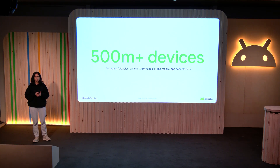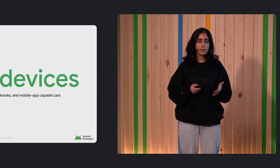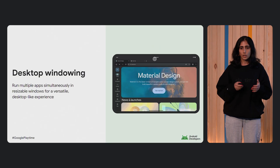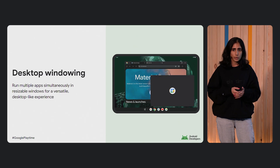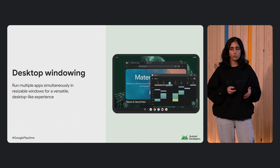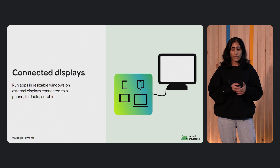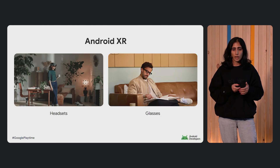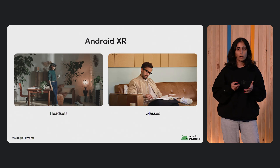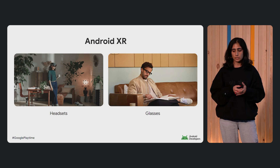There are over 500 million large screen devices today — all users that you can reach. This includes foldables, tablets, Chromebooks, and compatible cars, and this number will continue to rise. Users are also interacting with your app in multiple novel ways, like desktop windowing, where apps run in free-form windows in a desktop-like environment, and connected displays where you can hook up your device to an external monitor and run resizable windows. The ecosystem is even evolving into more novel form factors like XR with headsets and glasses. Your app should really be following these new trends and staying relevant.